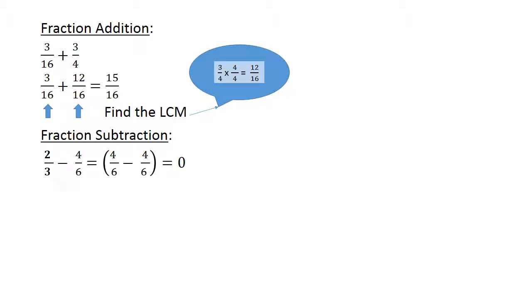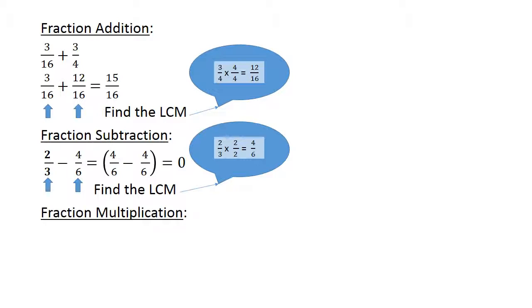Fraction subtraction. 2 over 3 minus 4 over 6. Again, you are not allowed to subtract. You have to find the lowest common multiple. It's the bottom part of the fraction. And in this subtraction sum, it's 6. So 2 over 3, you have to convert to 4 over 6. And you multiply the top part of the fraction with exactly the same number as the bottom part.